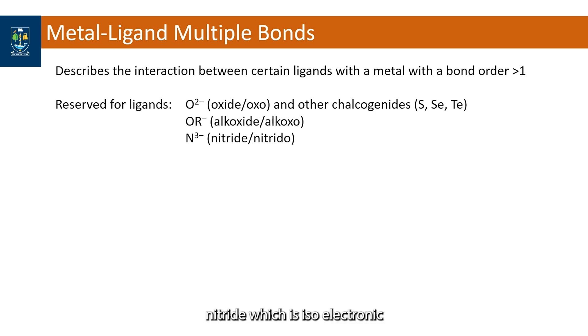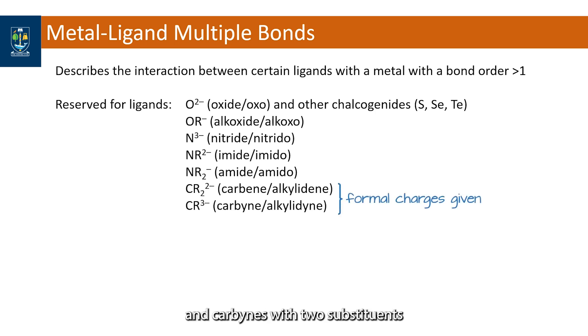the N3- nitride, which is isoelectronic to oxide, imides with one alkyl or aryl group attached to the nitrogen and amides with two, carbenes and carbenes with two substituents and one substituent respectively.